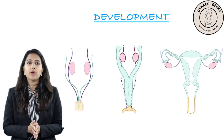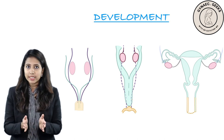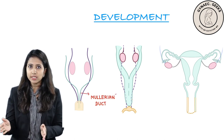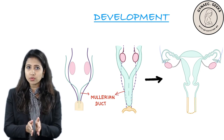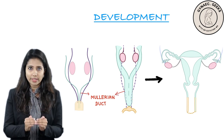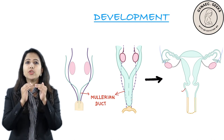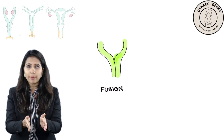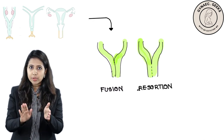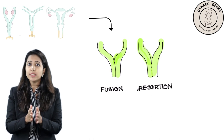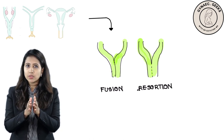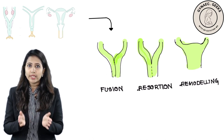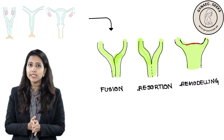Let's recap the development of the Mullerian tract. Basically, there are two Mullerian ducts, or paramesonephric ducts, which fuse in the midline to form the upper two-thirds of the vagina, the cervix, uterus, as well as the bilateral fallopian tubes. Once fusion happens, the membrane in between — the septa — is resolved. After resorption, there is remodeling at the fundus so that the curved structure of the fundus is attained.